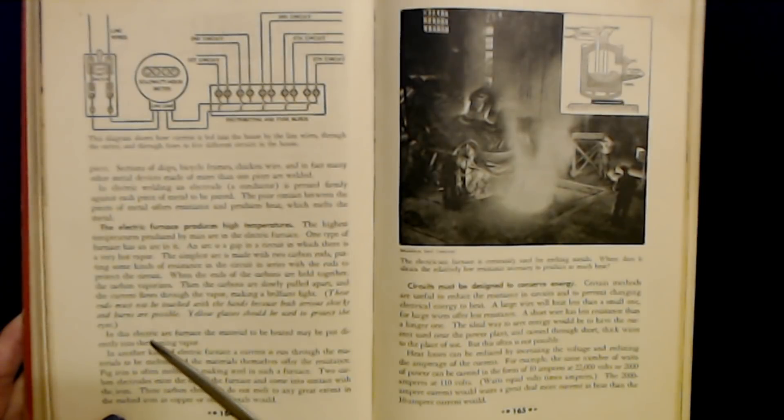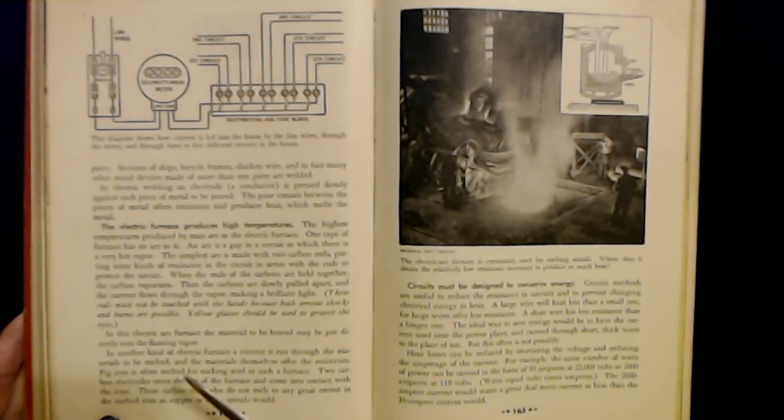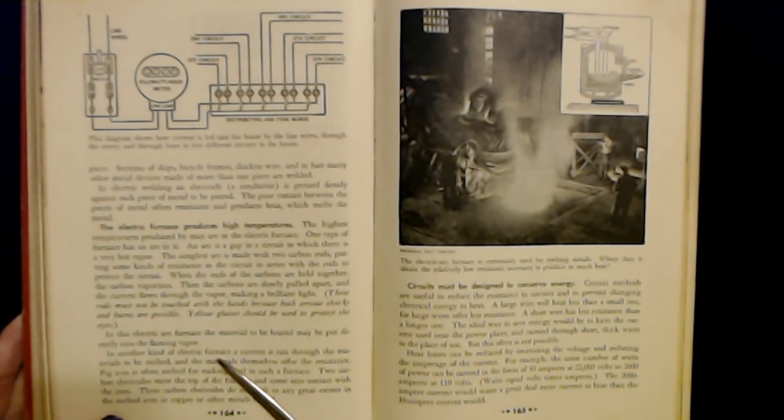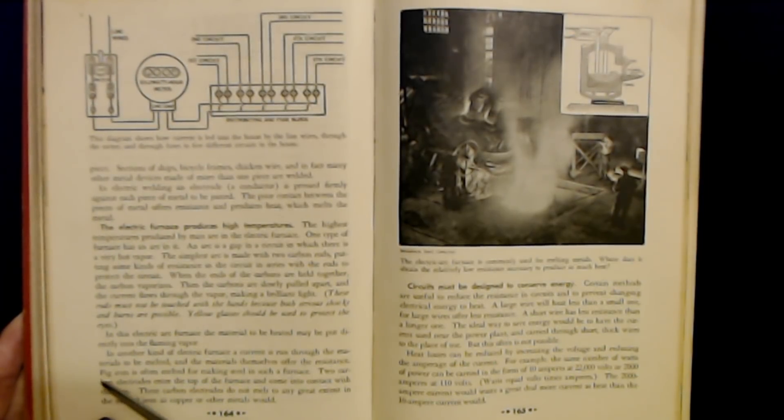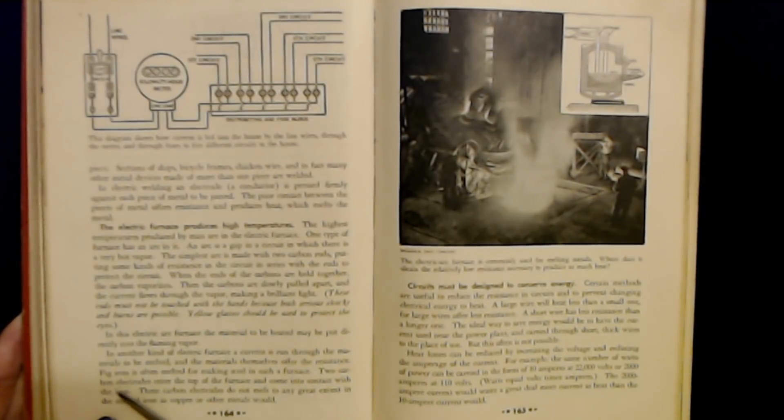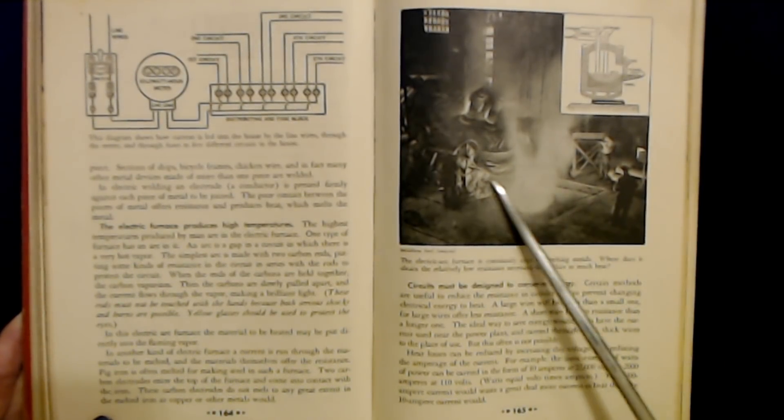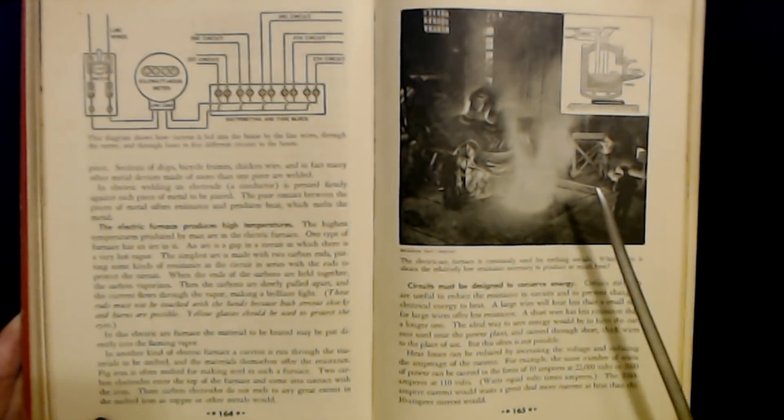In this electric arc furnace, the material to be heated may be put directly into the flaming vapor. In another kind of electric furnace, a current is run through the materials to be melted and the materials themselves offer the resistance. Pig iron is often melted for making steel in such a furnace. Two carbon electrodes enter the top of the furnace and come into contact with the iron. These carbon electrodes do not melt to any great extent in the melted iron as copper or other metals would.